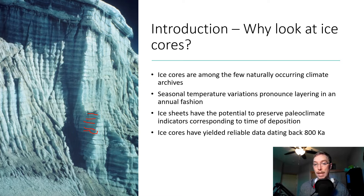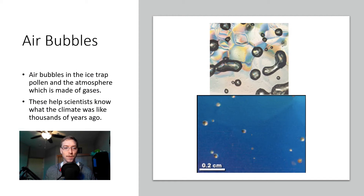Ice sheets have the potential to preserve paleoclimate indicators corresponding to the time of deposition. To date, ice cores have yielded reliable data back to 800,000 years into the past. How? Little tiny bubbles — air bubbles in the ice trap pollen and the atmosphere. And if we know the distribution of things like oxygen isotopes, we can get an idea of the depositional climate, of what that climate was like thousands of years ago.